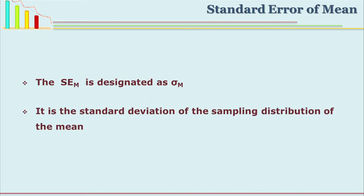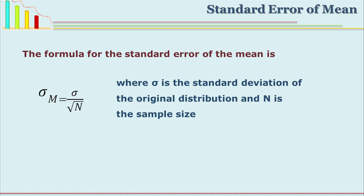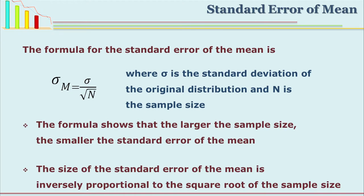Just as we designate standard deviation by sigma, here we designate standard error of mean as sigma M. Sigma M is the standard deviation of sample means. The formula for standard error of mean is: sigma M equals sigma divided by square root of N, where sigma is the standard deviation of the original distribution and N is the sample size. If N is large, the value of SEM will be smaller, meaning if you take a larger sample the standard error will be less, and your estimation of population mean is better.